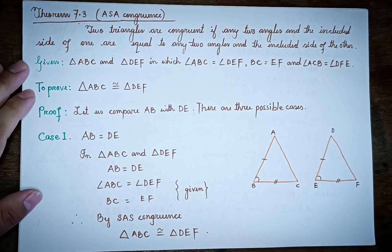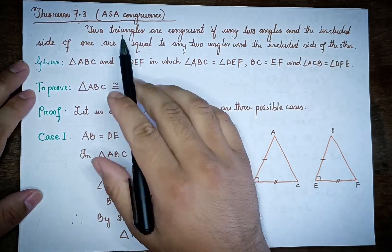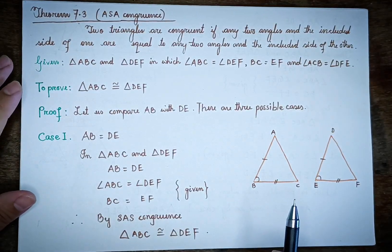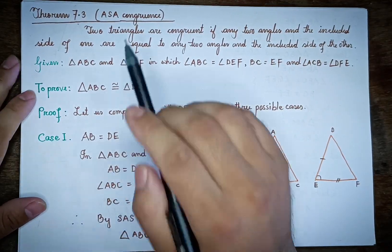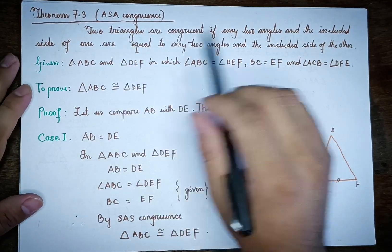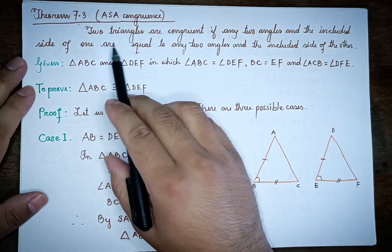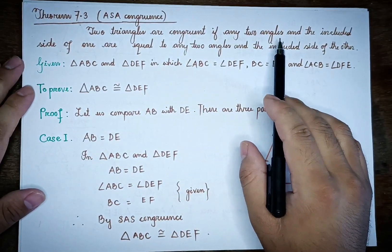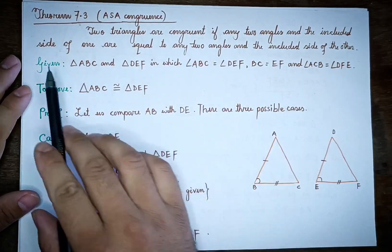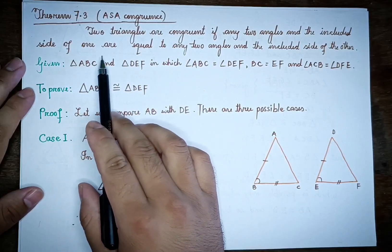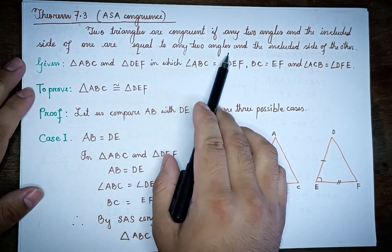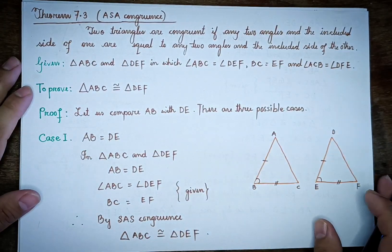Let's talk about Theorem 7.3. Theorem 7.3 states ASA congruence: two triangles are congruent if any two angles and the included side of one triangle are equal to any two angles and the included side of the other triangle.